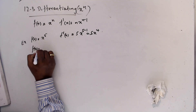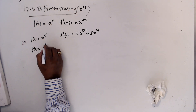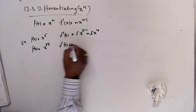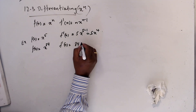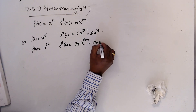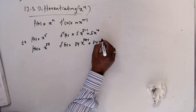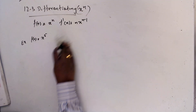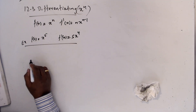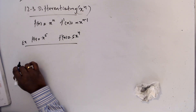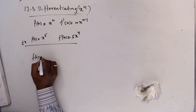If f(x) = x⁸⁴, then f'(x) is 84·x⁸⁴⁻¹, which is 84·x⁸³. Now if f(x) = xʸ, then f'(x) is y·xʸ⁻¹.